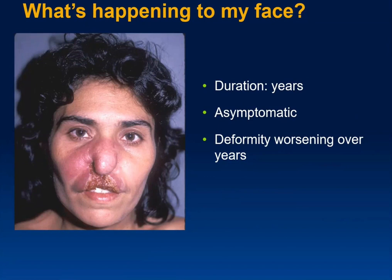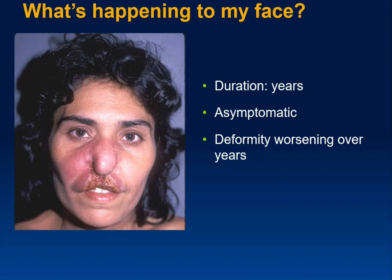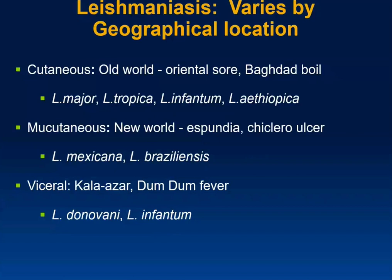A lady comes in saying: what is happening to my face? It's been going on for years — totally asymptomatic, worsening deformity involving the nose from the bridge down to the labial area and upper lip. She lives in Central or South America. This is cutaneous leishmaniasis. There are cutaneous, mucocutaneous, and visceral manifestations. Old World forms include L. major, L. tropica, L. infantum, and L. aethiopica. New World forms include L. mexicana and L. braziliensis. Visceral leishmaniasis involves L. donovani and L. infantum.